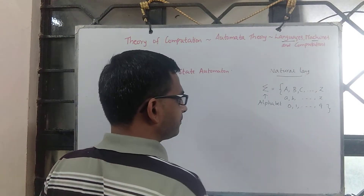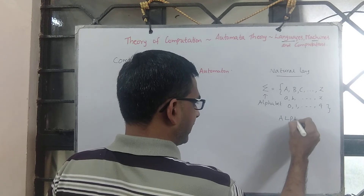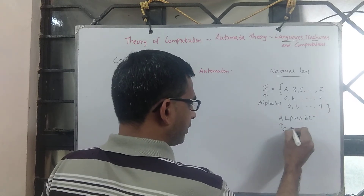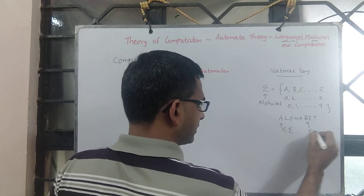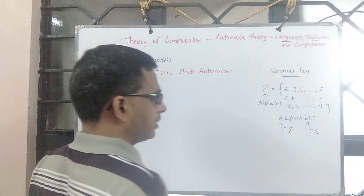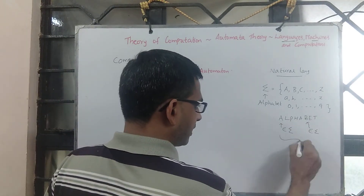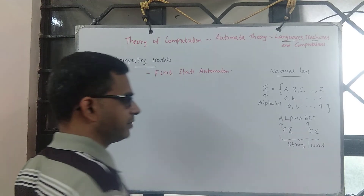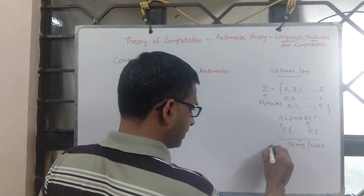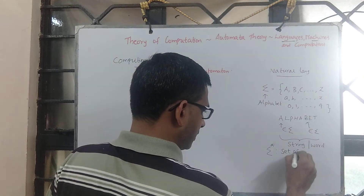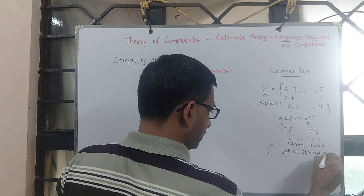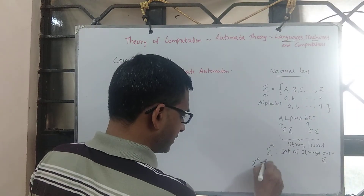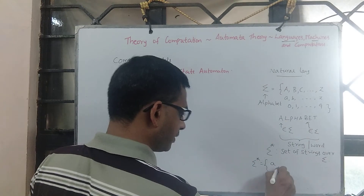If you look at the word 'alphabet', you see that each character is a symbol belonging to sigma. Each one is a symbol, and in particular this word is called a string. So it is a string over sigma, which means we define something called sigma star, which is the set of all strings over sigma. For example, sigma star consists of strings where each individual symbol is also a string or a word.